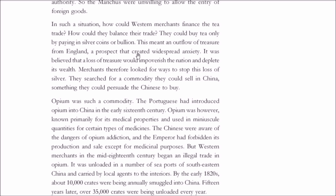But paying in silver coins created another problem. The English felt that giving silver coins to the Chinese would deplete the nation's treasure and impoverish England. So a different commodity was needed — something the East India Company could sell in China in order to buy tea. That commodity was opium.